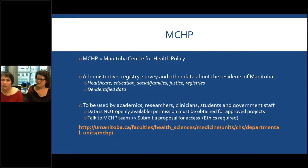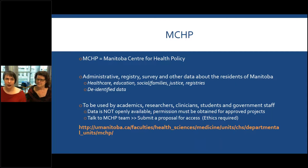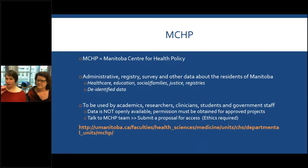One resource that might be less familiar, and it's specifically related to Manitoba, is the Manitoba Centre for Health Policy, hosted at the University of Manitoba. It contains administrative registry and survey data about the residents of Manitoba specifically. It's not just healthcare — it also includes things like education, social and families, justice, and registries. All the data has been de-identified, so it's essentially anonymous. The data is intended to be used by academics, researchers, clinicians, students, and government staff. However, the data is not openly available — you need to submit a request for access and a proposal.